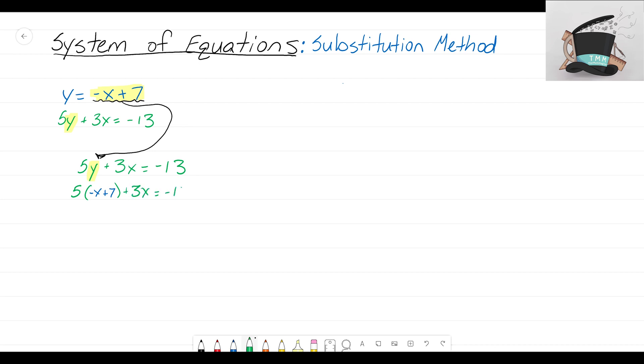So instead of writing that y variable, I'm going to switch it to be what y actually is: y is negative x plus 7. I'm also going to continue to write out the rest of that equation. Now what I've just done is I've taken y and substituted what y is. That is what the substitution method is all about.